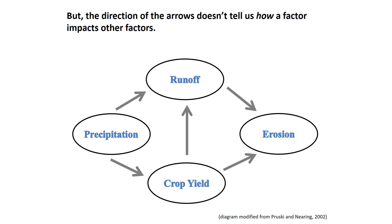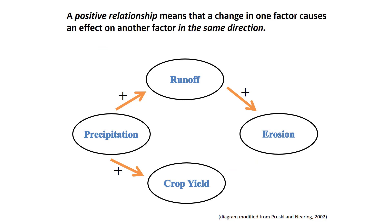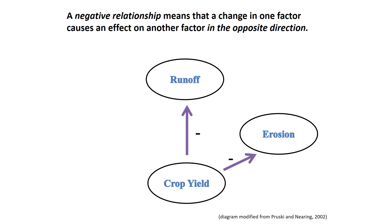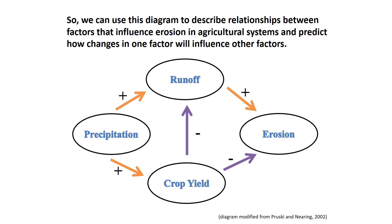The direction of the arrows doesn't tell us how a factor impacts other factors. The plus and minus signs indicate what type of relationship exists between the factors. A positive relationship means that a change in one factor causes an effect on another factor in the same direction — for example, an increase in precipitation causes an increase in runoff. A negative relationship means that a change in one factor causes an effect on another factor in the opposite direction — for example, an increase in crop yield causes a decrease in erosion.